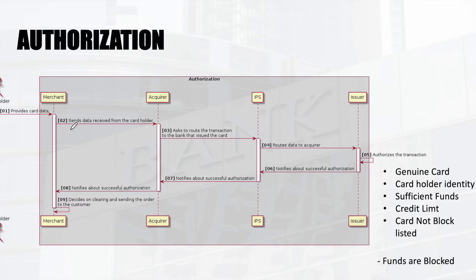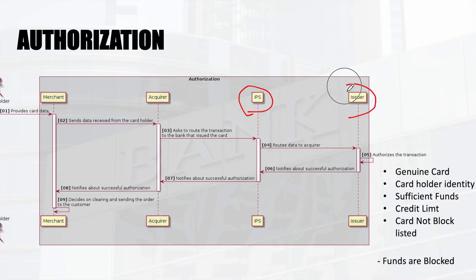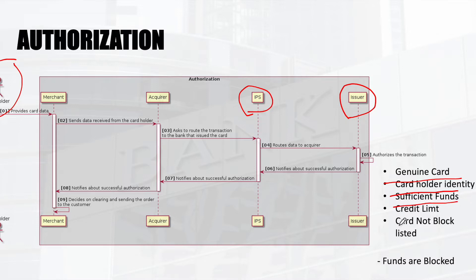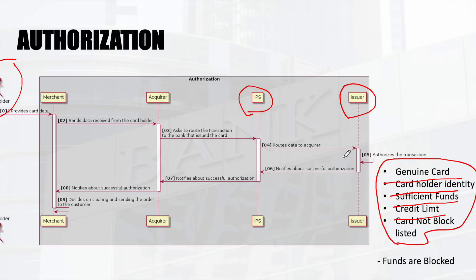The cardholder swiped the card, the information went via the acquirer and IPS — such as Visa and Mastercard — to the issuer. The IPS provides network connectivity and data security. The issuer, the bank which issued the card, checks whether it is a genuine card, the cardholder identity is genuine, sufficient funds are available, the amount is within the credit limit, and the card is not blocklisted. Once authorization is done, the funds in the card are blocked.